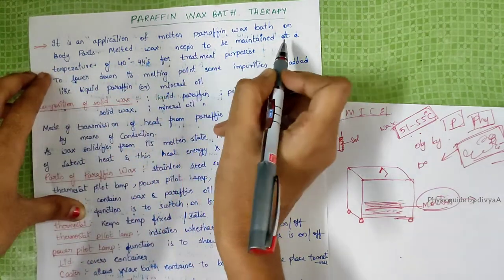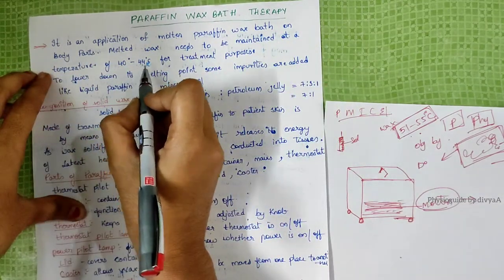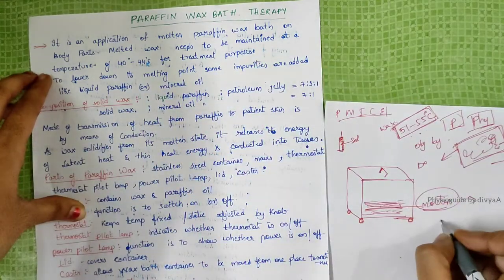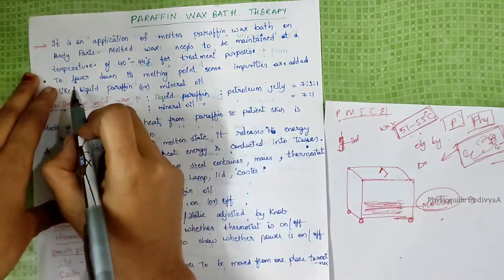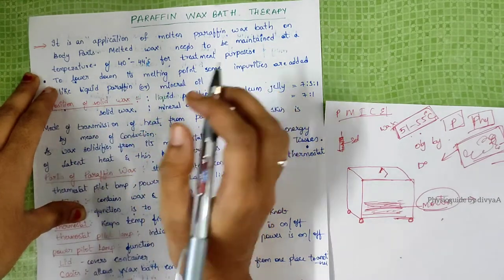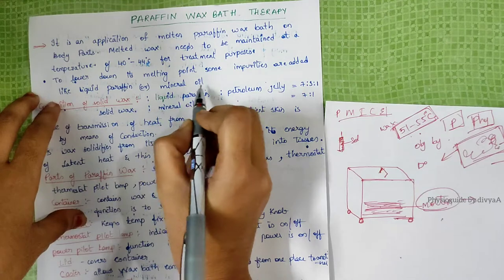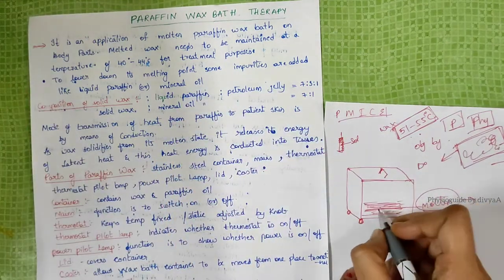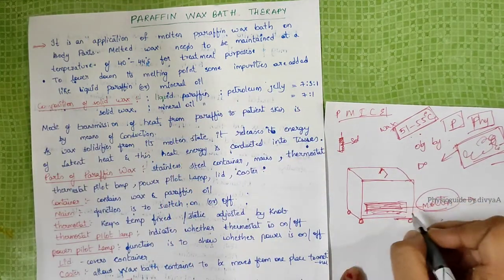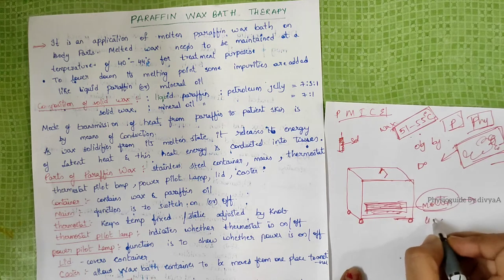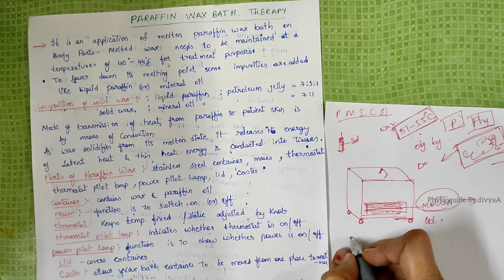It's an application of molten liquid paraffin wax. The melted wax needs to be maintained at a temperature of 40 to 44 degrees Celsius for treatment purposes. To lower down the temperature, some impurities are added like liquid paraffin and mineral oil.